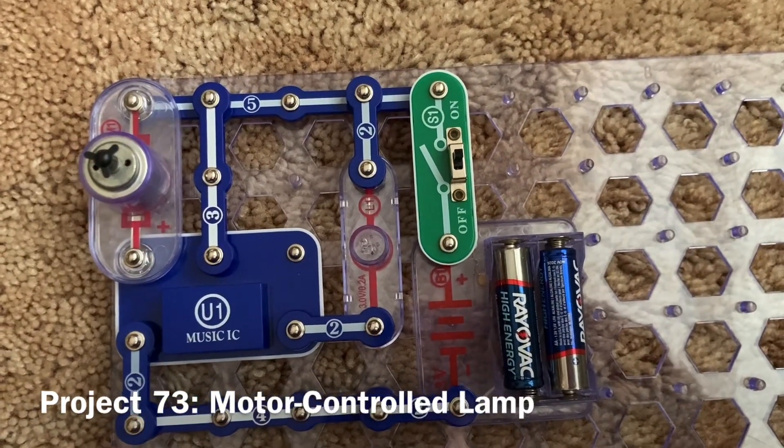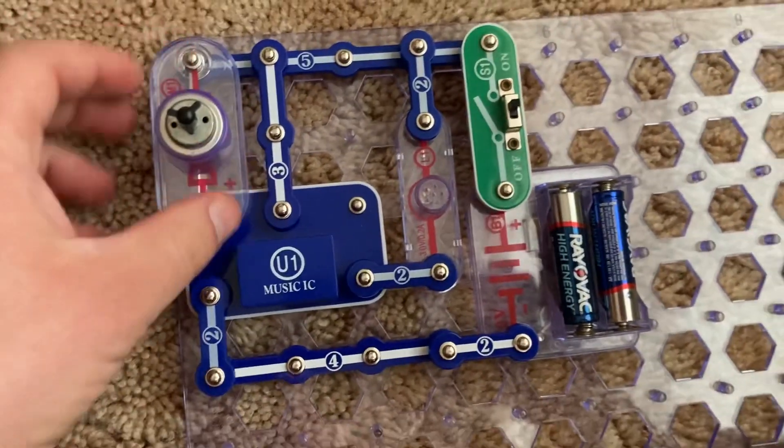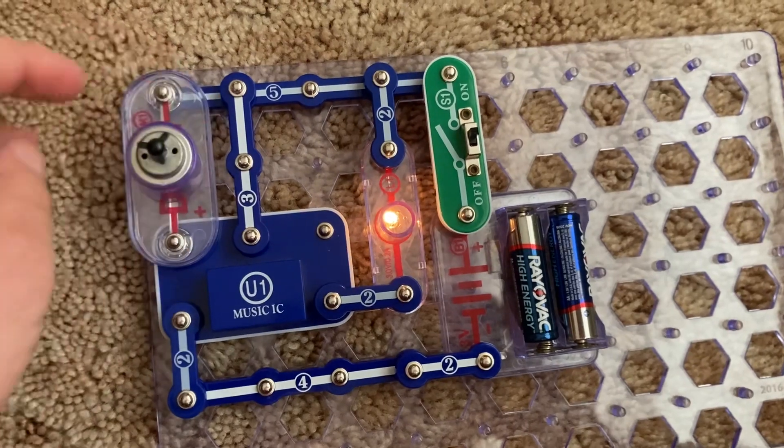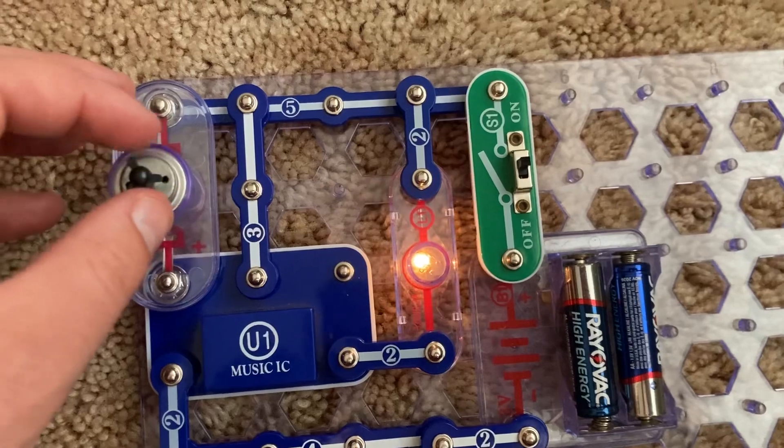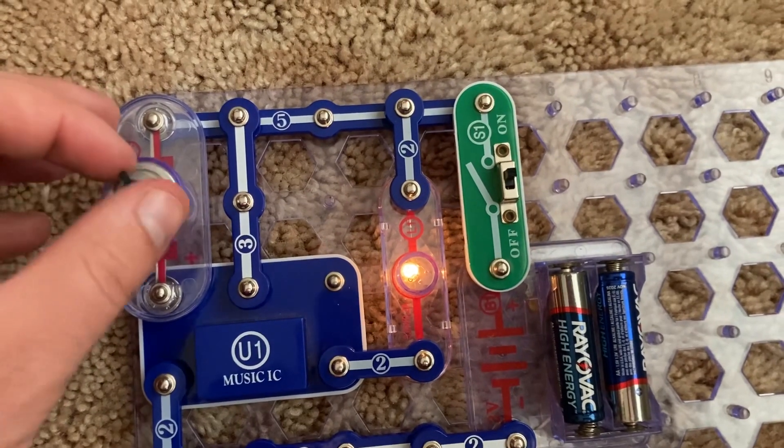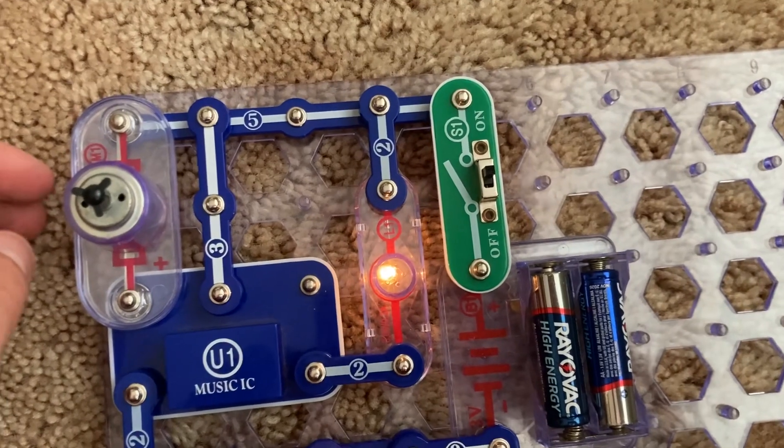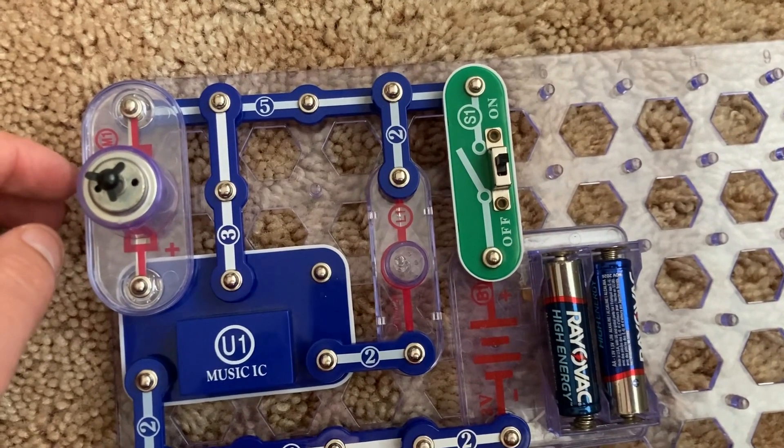Project 73 is motor controlled lamp. When I replace the whistle chip with the motor and when I turn it, the lamp comes on. In this project, turning the motor generates mechanical energy, which is then converted into electrical energy.